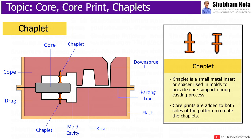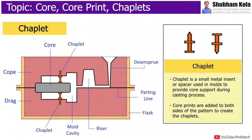In the casting process, a chaplet is a small metal insert or spacer used in molds to provide core support during the casting process. Core prints are added to both sides of the pattern to create chaplets.